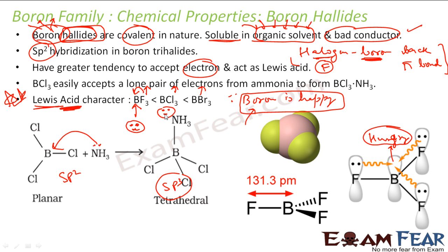In BF3, boron is happy because fluorine satisfies its electron deficiency, so it does not act as a strong Lewis acid. In BCl3, boron is a little okay. But in BBr3, boron is not satisfied because bromine does not donate enough electrons. So BBr3 acts as a strong Lewis acid compared to BF3. Fluorine is most kind compared to chlorine and bromine, so back donation occurs more with fluorine because of its smaller size.